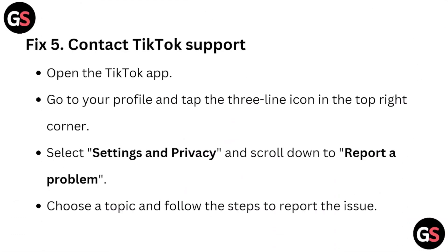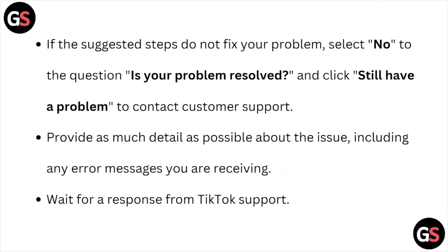Fix number five: contact the TikTok support team. Open the TikTok app, go to your profile, and tap on the three-line icon in the top right corner. Select Settings and Privacy and scroll down to Report a Problem. Choose a topic and follow the steps to report an issue. If the suggested steps do not fix your problem, select No to the question 'Is your problem resolved?' and click Still Have a Problem to contact customer support. Provide as much detail as possible about the issue, including any error messages you're receiving, and wait for a response from the TikTok support team.